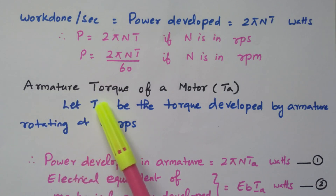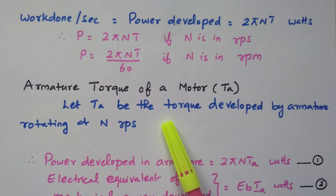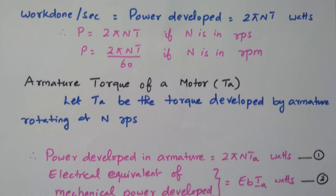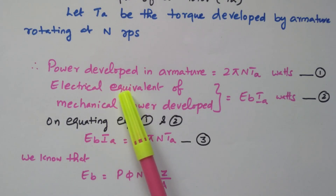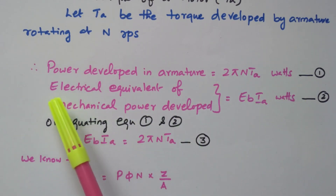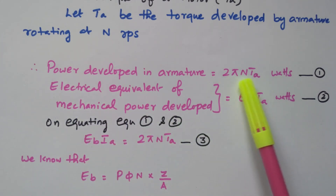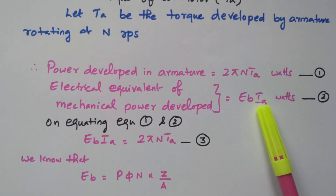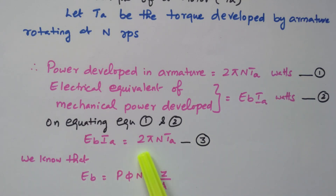We can now derive the armature torque, called TA. Let TA be the torque developed by the armature rotating at N RPS. Power developed in the armature is 2πN into TA watts. The electrical equivalent of this mechanical power is EB into IA — back EMF into armature current. Both are equal, so EB × IA equals 2πN × TA.